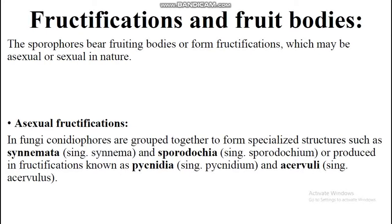Fructification, fruiting bodies — fruiting bodies are from fructification which may be asexual or sexual in nature. The sporophore is part of the thallus of a sporophyte that develops spores — spore-bearing branches and organs. This sporophore forms fruiting bodies, and fruiting bodies are of two types: asexual and sexual in nature.